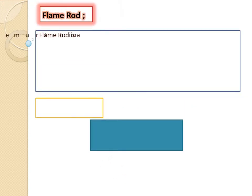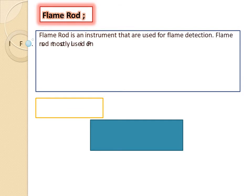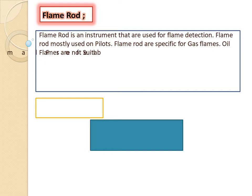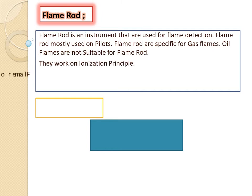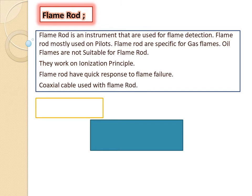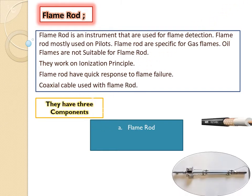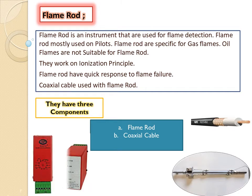Flame Rod is an instrument used for flame detection. Flame Rod is mostly used on pilots. Flame Rod is not specific for flame gases, and oil flames are not suitable for flame rods. They work on the ionization principle and have a quick response to flame failure. A coaxial cable is used with the Flame Rod. They have three main components: the Flame Rod, Coaxial Cable, and Electronics Module or Relay.